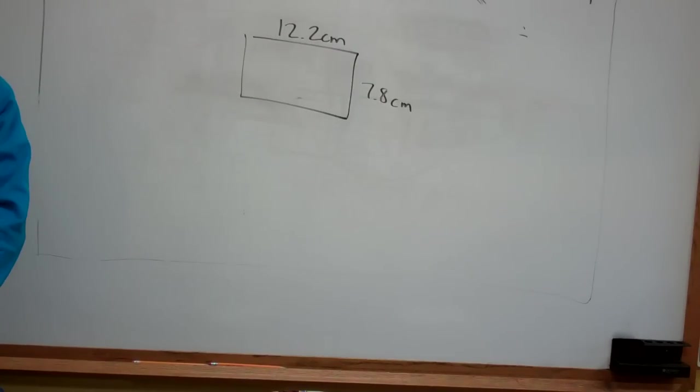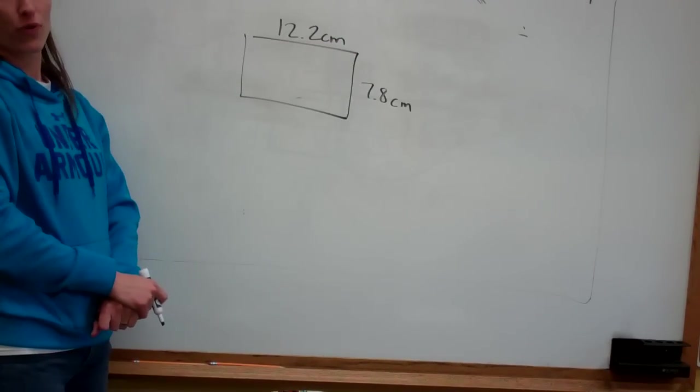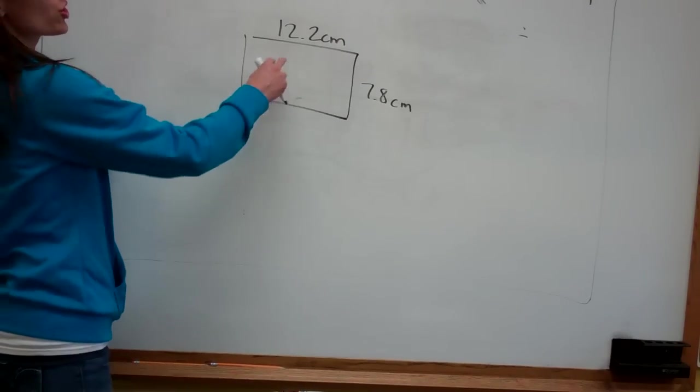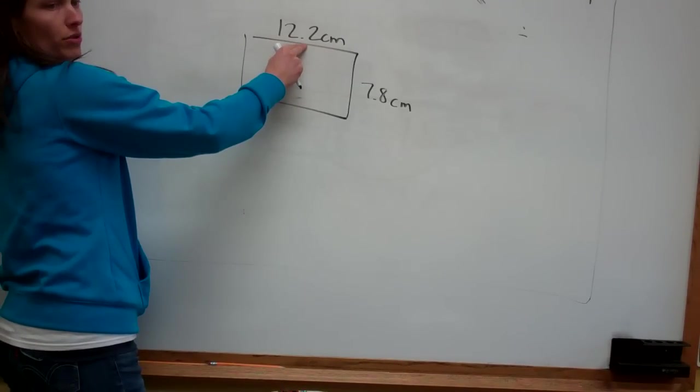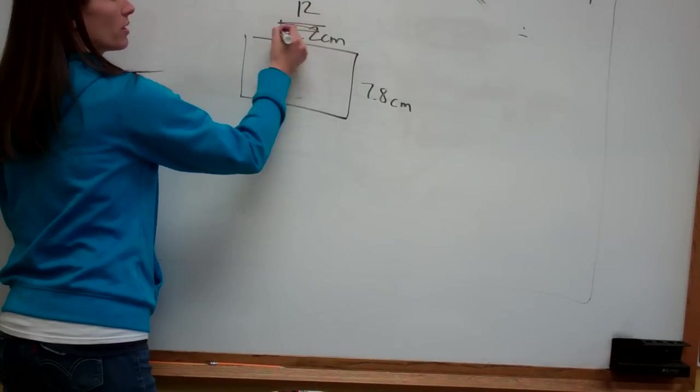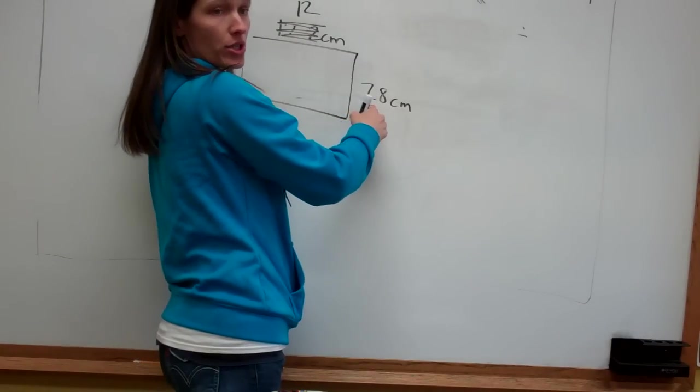Estimate the area of this rectangle. So what do they want me to do first? Oh, they want you to round them. Because that's what estimate means. To round before you answer the problem. Okay? So what would 12.2 turn into? 12. 12. Good job. 12. And what would 7.8 turn into?